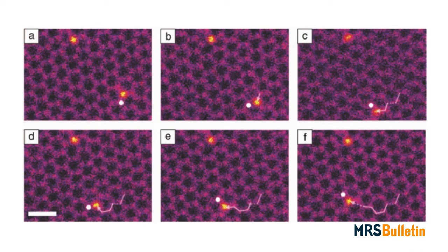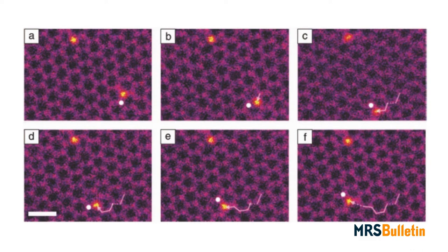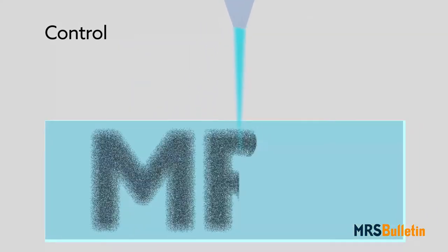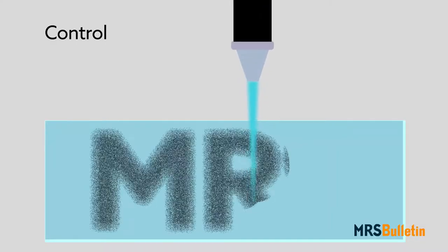But before meeting Feynman's challenge, researchers will have to address a few others. One is control. While writing with particle beams has been proven, it isn't clear how the parameters can be tweaked to form different structures.